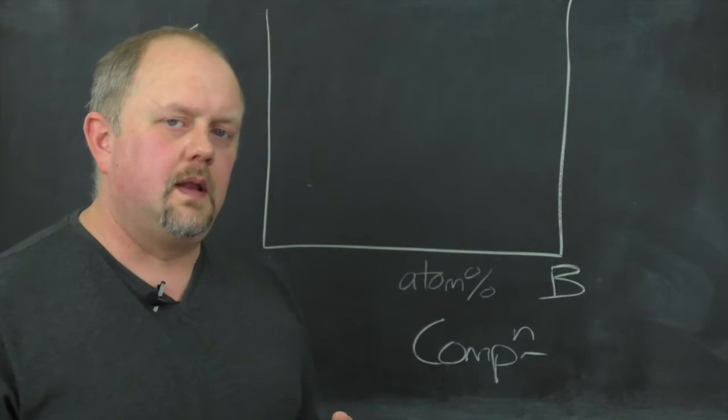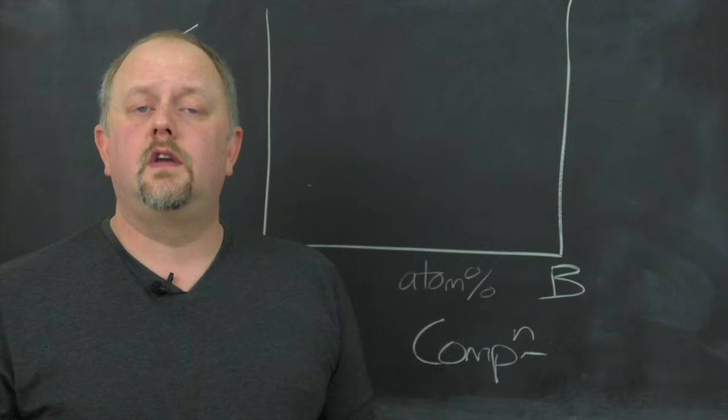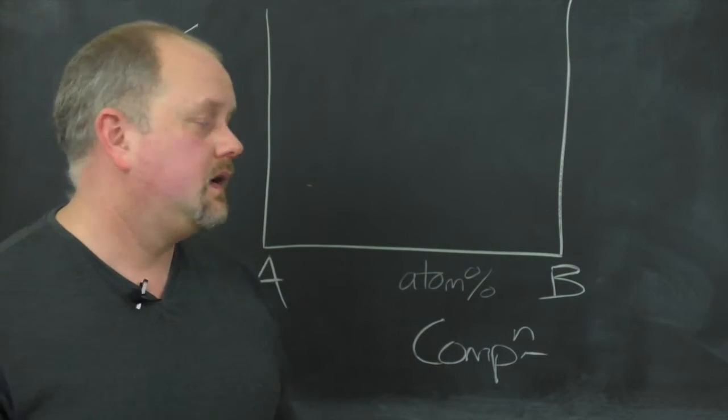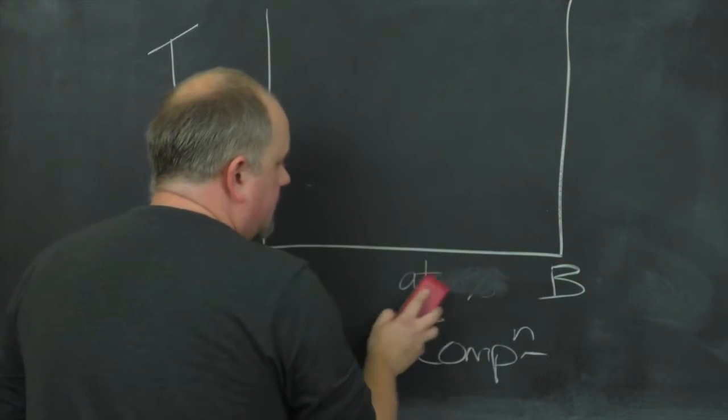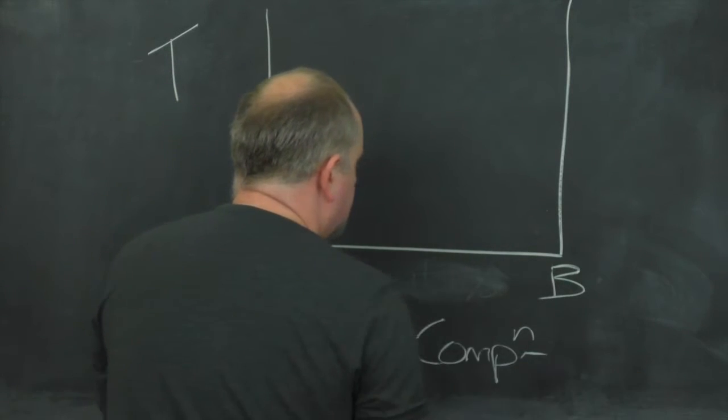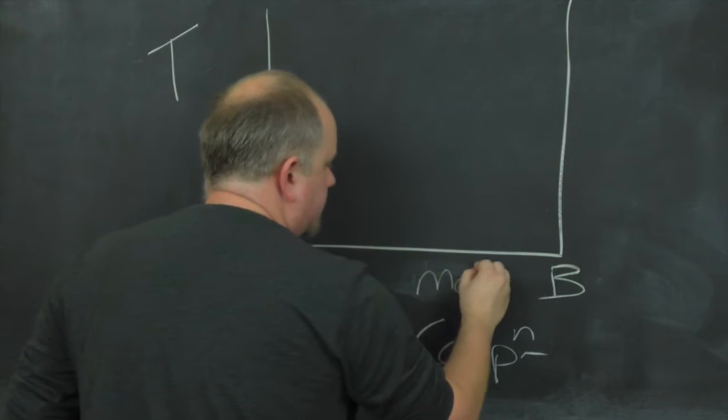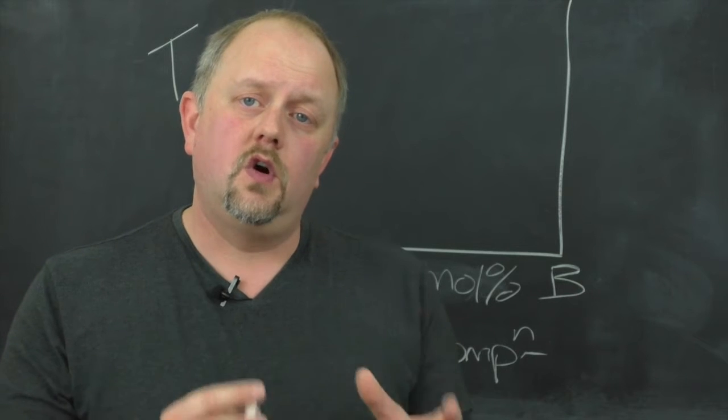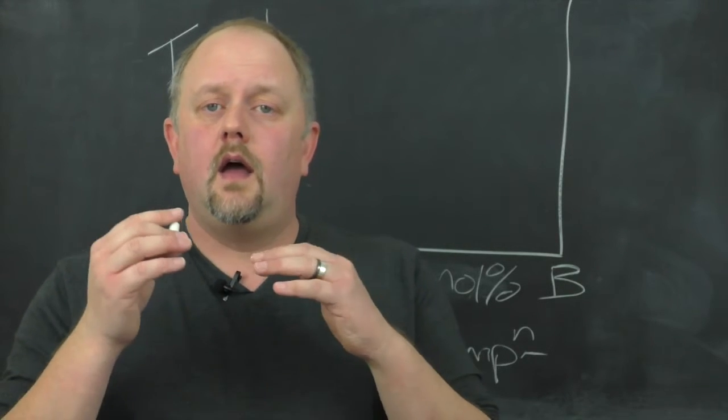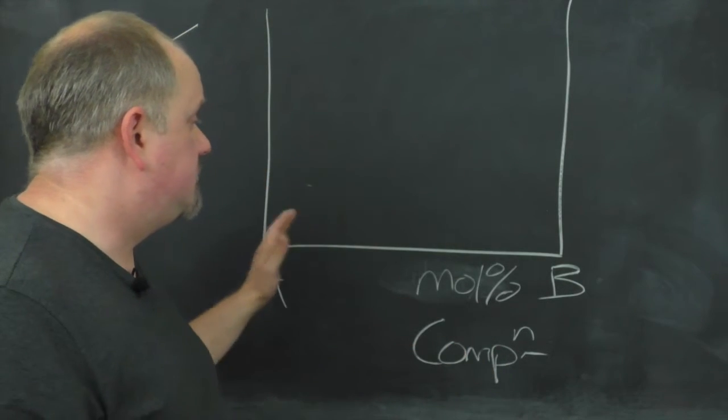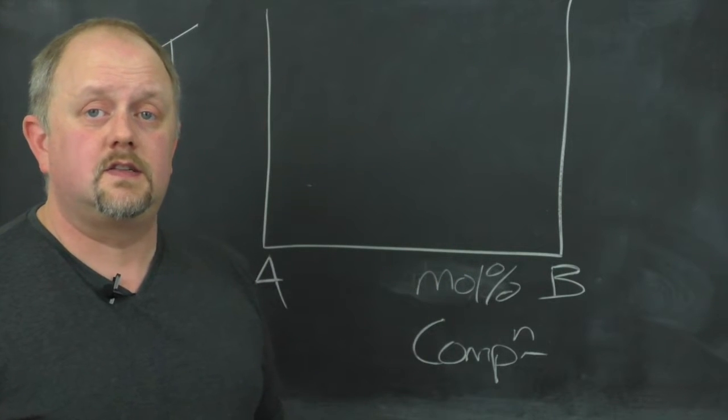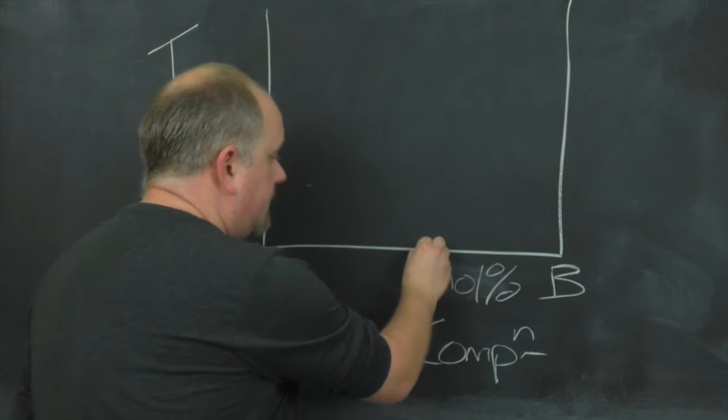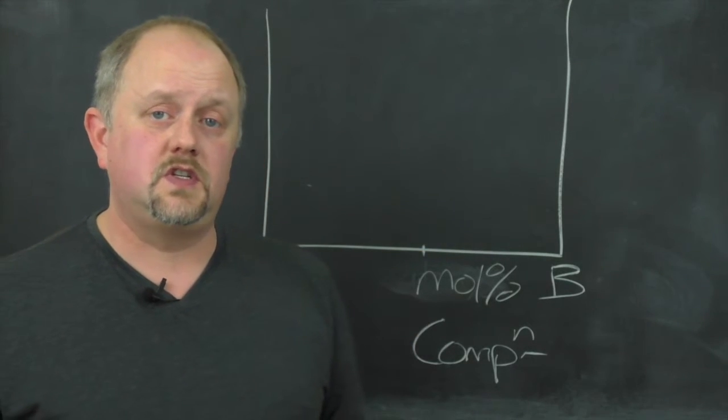But it falls down in more complex scenarios such as when you have inorganic materials where there's more than one atom present. In this case it's usually better to use mole percent or mole fraction. When we use mole percent, the composition of a phase relates directly to its position on the composition axis. So if we have something that is 50 mole percent B, it would lie directly in the middle of the composition axis.